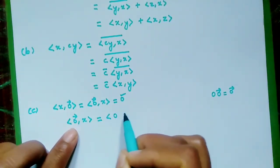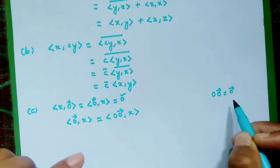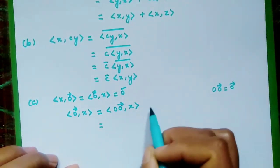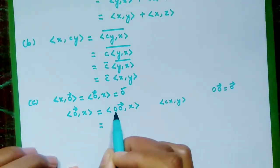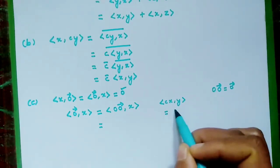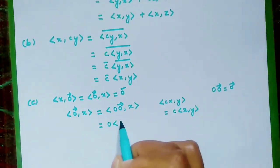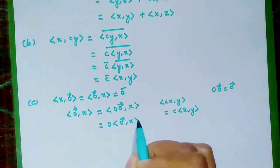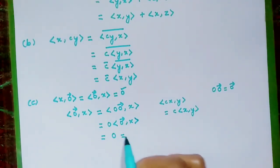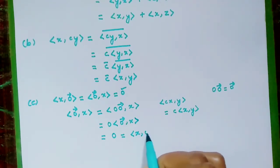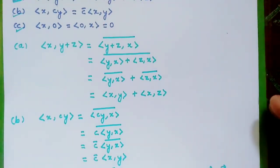This is of the form ⟨cx, y⟩ where c is a scalar, which is exactly equal to c⟨x,y⟩, so we can take the scalar outside and we have ⟨0·0_vec, x⟩, and 0 times anything is 0. The same argument holds for ⟨x, 0_vec⟩, hence the third statement is also proved.